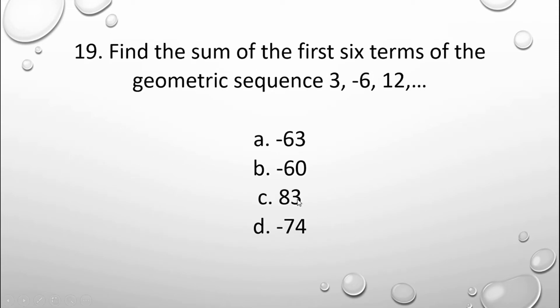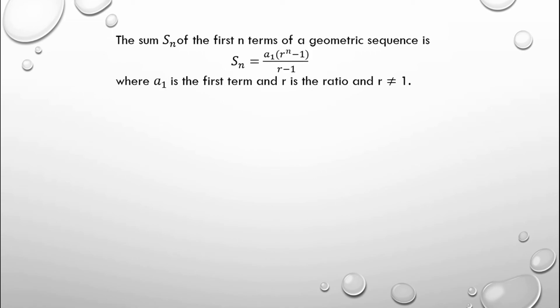Next: find the sum of the first 6 terms of the geometric sequence 3, negative 6, 12. The choices are: a) negative 63; b) negative 60; c) 83; d) negative 74. The sum of the first n terms of a geometric sequence is S sub n equals a sub 1 times r raised to n minus 1, all over r minus 1, where a sub 1 is the first term and r is the ratio, and r must not equal 1.